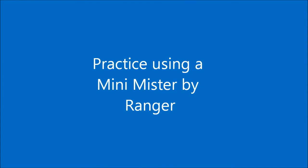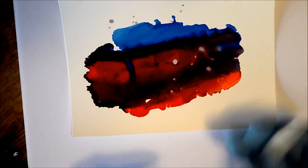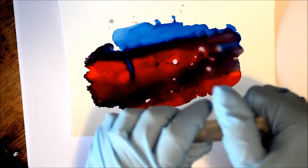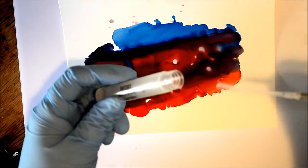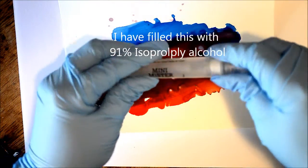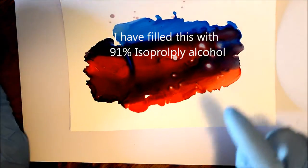All right, so let's go ahead and try a practice session using a Mini Mister by Ranger inks. I've put some dark color inks down and let it dry, and I'm grabbing my Mini Mister made by Ranger. You can see it's just a very small bottle with a little tube in here. You can really use any kind of spray bottle you have, but the trick is having a fine mist spray.